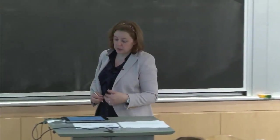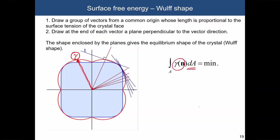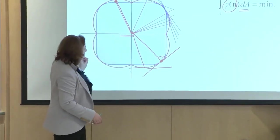The construction itself, from a practical perspective, is done as follows. You take a point on the red curve that represents the surface energy, draw a line from the center, and plot another line that is at 90 degrees to that — a tangent to the curve. You do this for every point within the surface energy plot, repeating the process: take another point, draw a tangent, and continue until you finish the full circle around the curve.